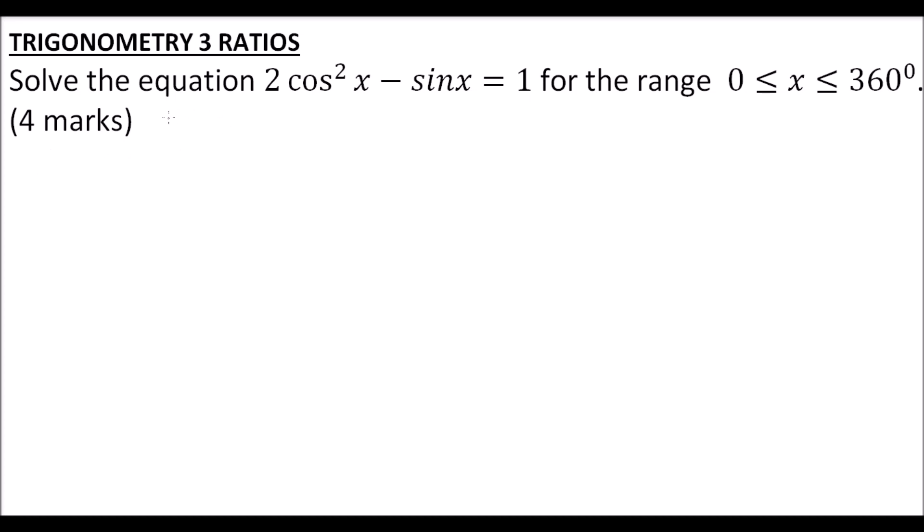We start by using the identity cos²x + sin²x = 1. If we take sin²x to the other side, it implies that cos²x = 1 - sin²x.